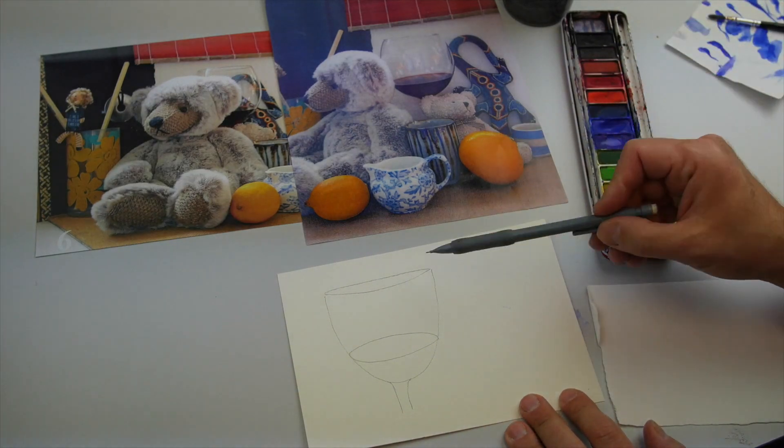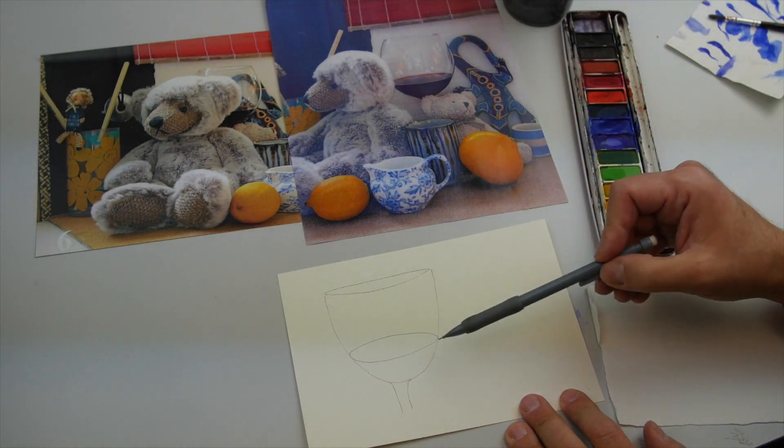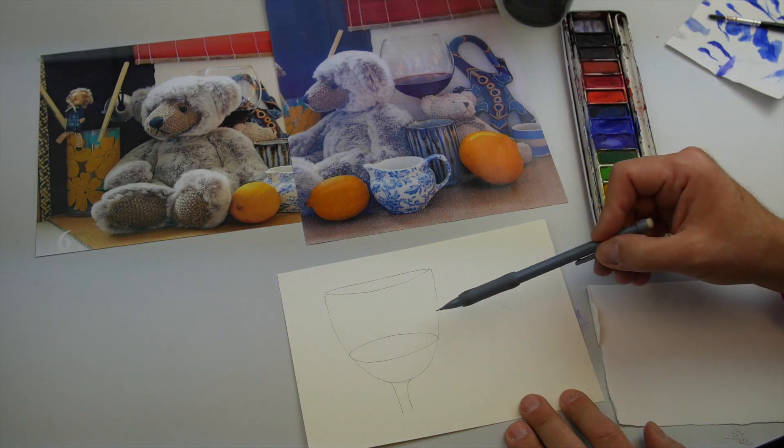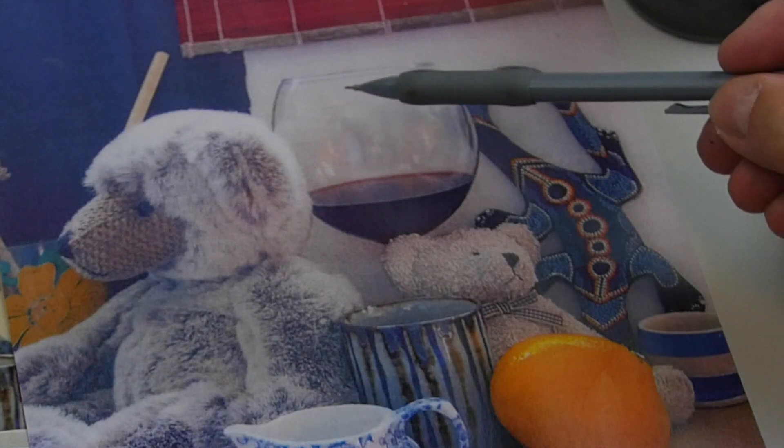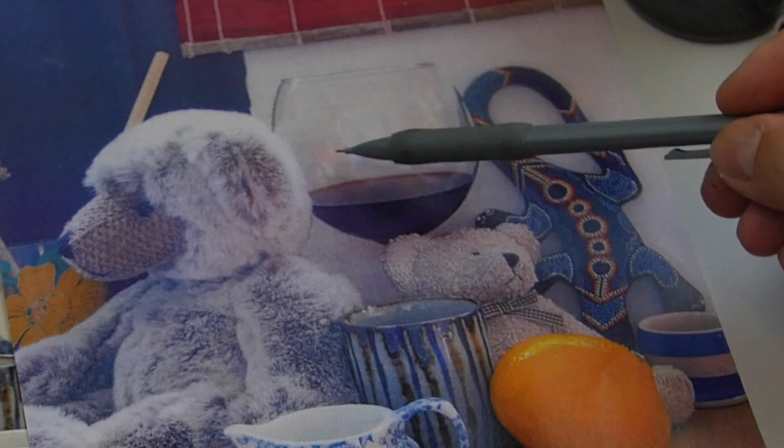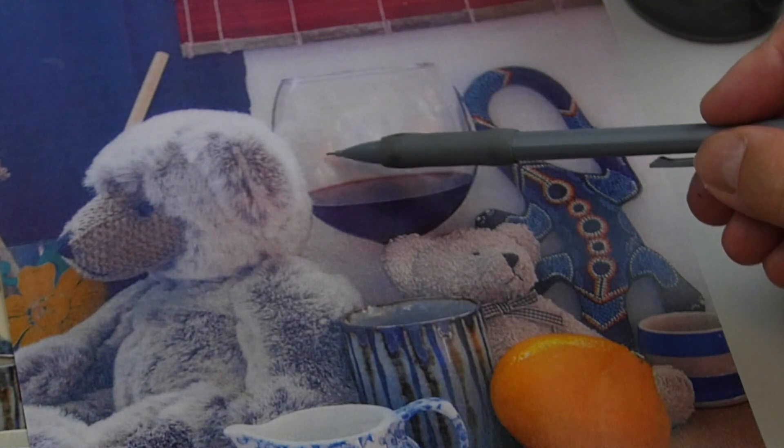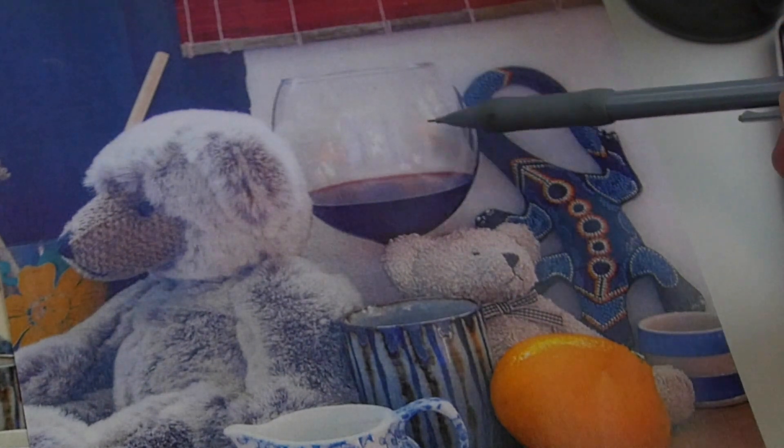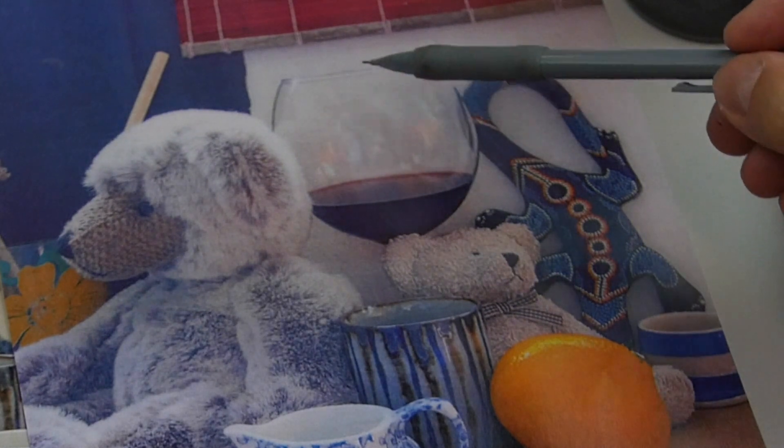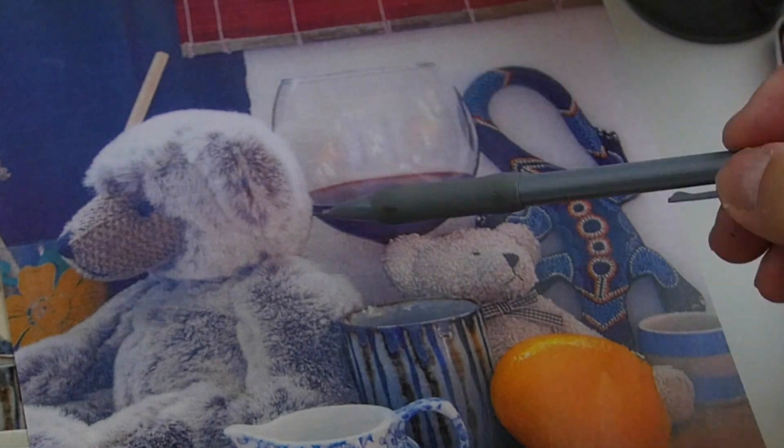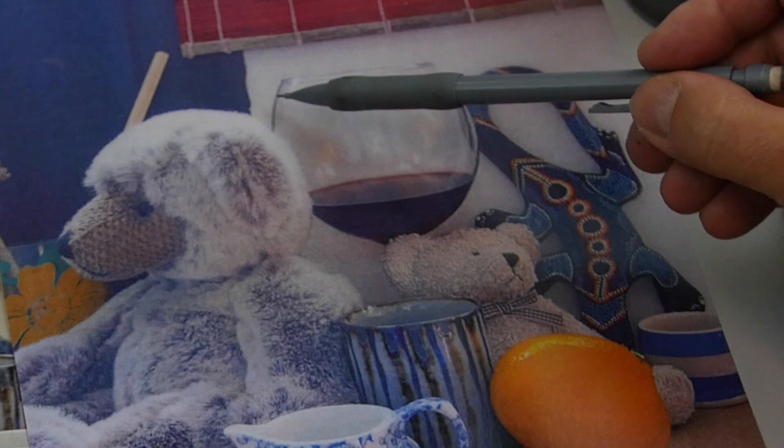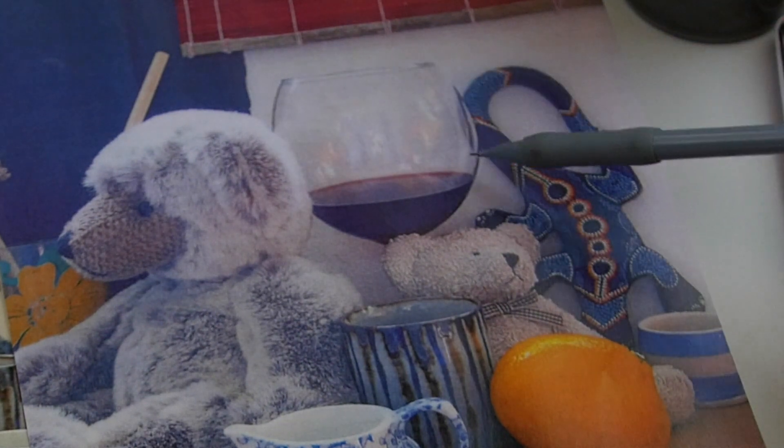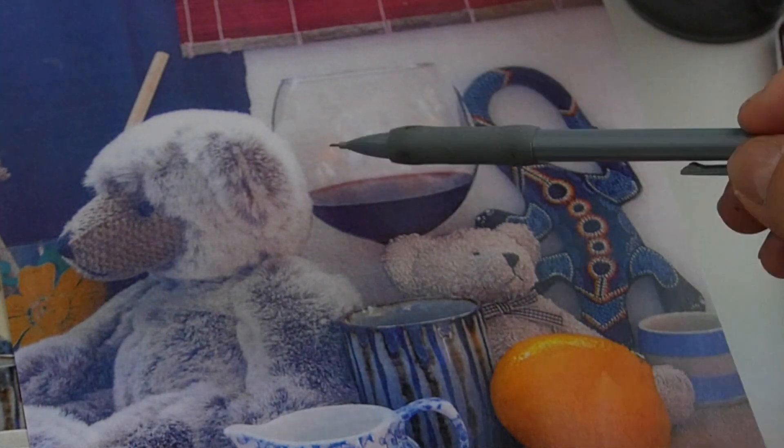So when it comes to painting the wine glass, one of the things we have to think about is all of these very subtle reflections. There's a little bit of yellow and obviously this grayer color where you can see the background through the wine glass, and then these very subtle edges which give an idea that this is made out of glass.